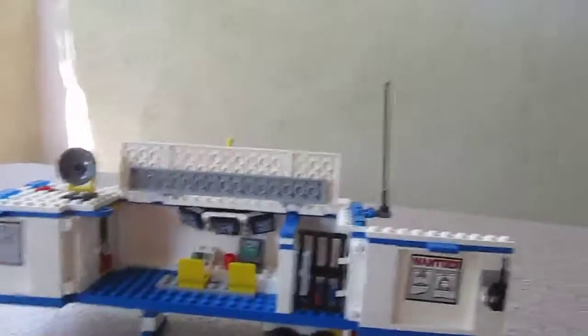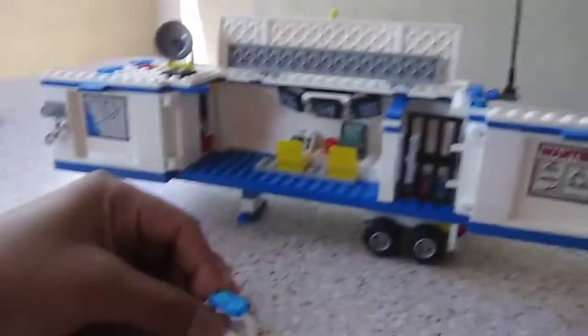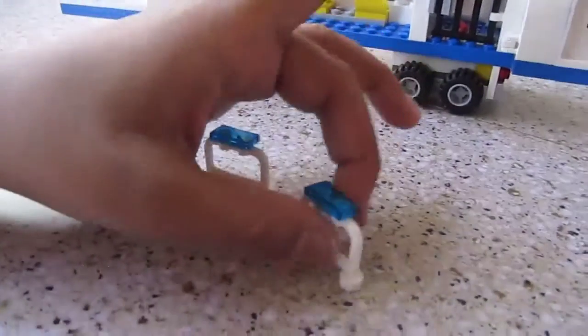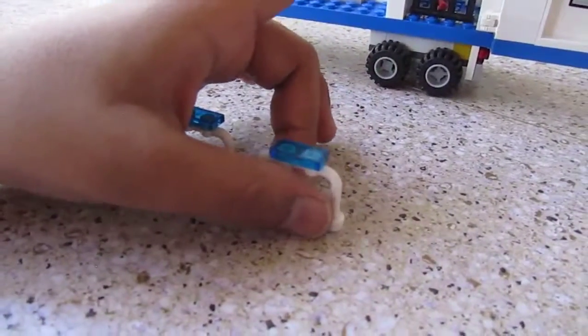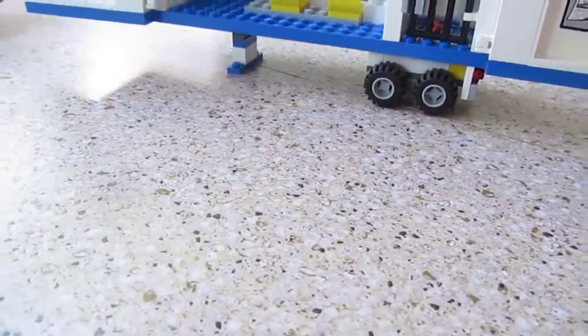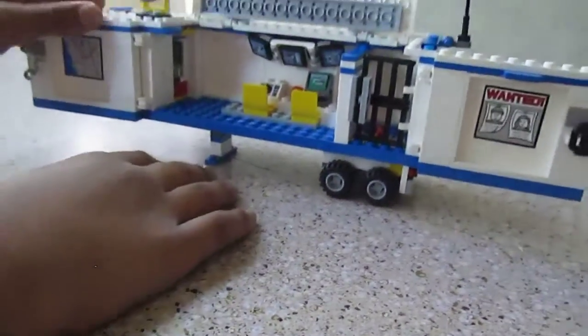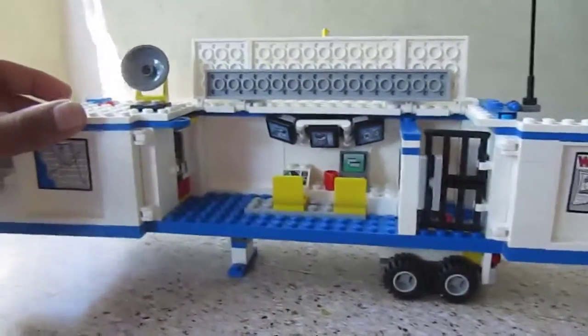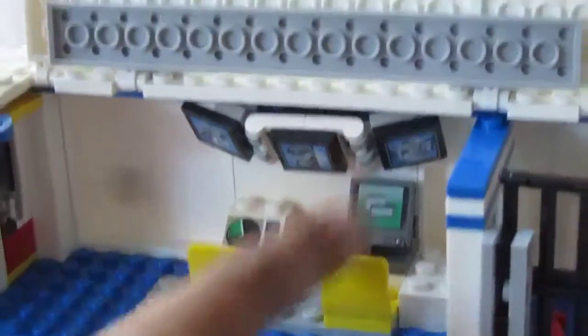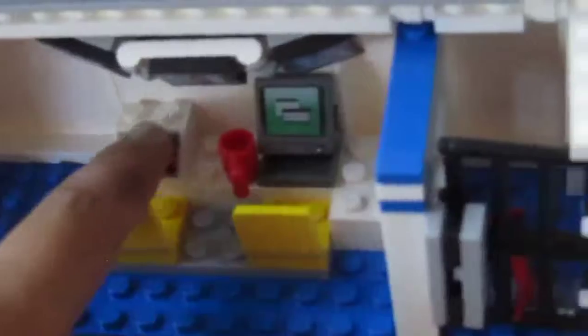So you got two barricades which we will look at at this point right now. They're really simple build, not that hard. You get two of those. Put that to the side.